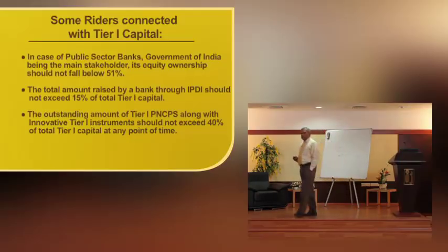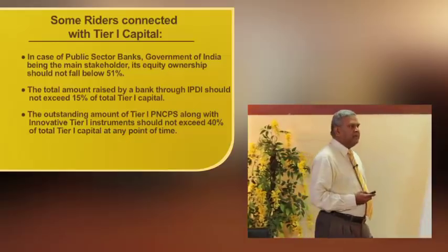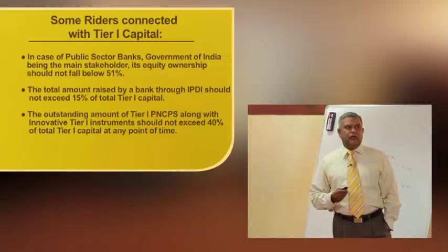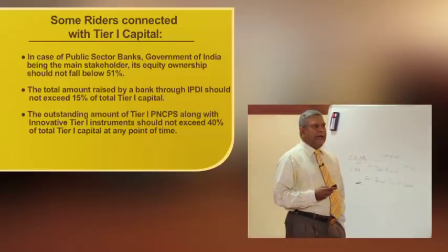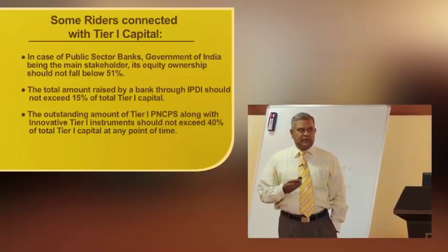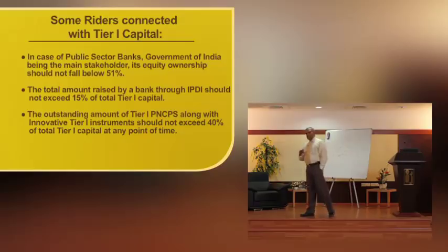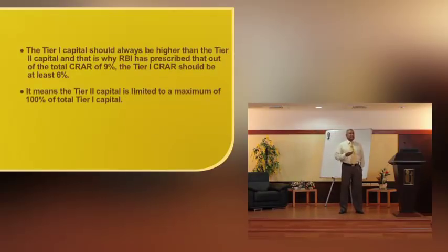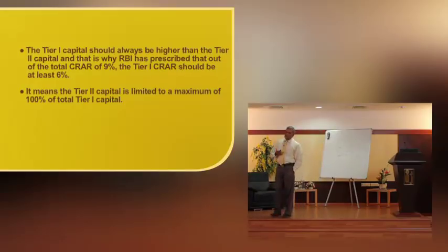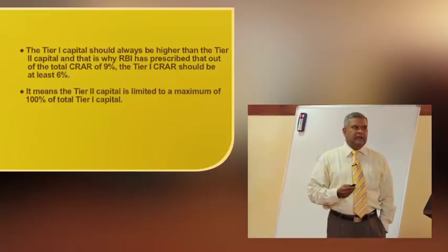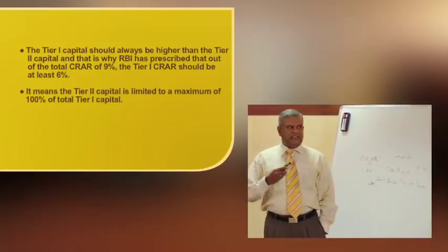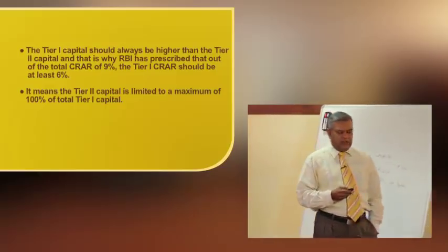Some prudential limits are given by RBI for Tier-1 capital. In case of public sector banks, because the government is a majority stakeholder, it always ensures their stake does not fall below 51%. The total amount raised through IPDI should not exceed 15% of Tier-1 capital. IPDI and PNCPS put together should not exceed 40% of Tier-1 capital. The Tier-1 capital should always be higher than or equivalent to Tier-2 capital — Tier-2 capital at any point of time should not be more than Tier-1 capital.